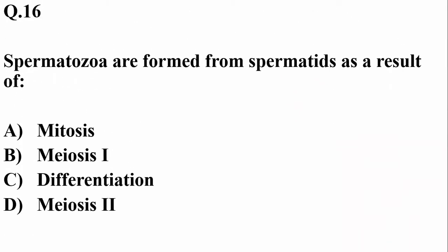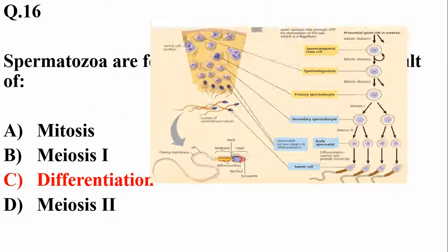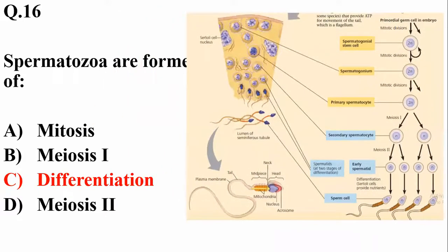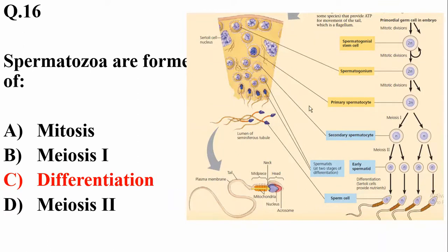Question number sixteen: spermatozoa are formed from spermatids as a result of differentiation, rather than mitosis or meiosis. Spermatozoa are the final sperm cells, and differentiation is the process that converts early spermatids into final spermatozoa.